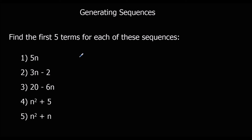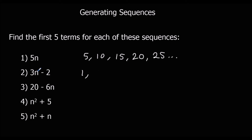The first one: 5 times 1 is 5, 5 times 2 is 10, 5 times 3 is 15, 5 times 4 is 20, and 5 times 5 is 25. For 3n minus 2: 3 times 1 minus 2 is 1, 3 times 2 minus 2 is 4, 9 minus 2 is 7, and it goes up in 3s: 10, 13.